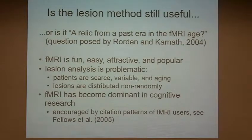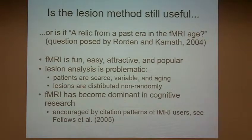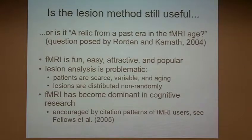All of these make lesion analysis a less practical enterprise than we would like, whereas with fMRI it's very easy to recruit 30 healthy undergraduates who are for all practical purposes identical, and run them in the scanner over the course of a few weeks. Leslie Fellows and a few fellow postdocs at Penn did a literature review and discovered that not only is fMRI dominating the literature, but fMRI people tend to cite fMRI articles disproportionately.